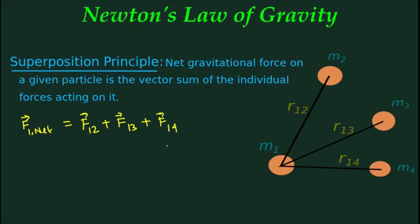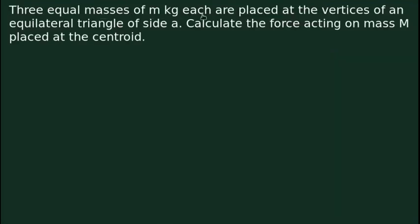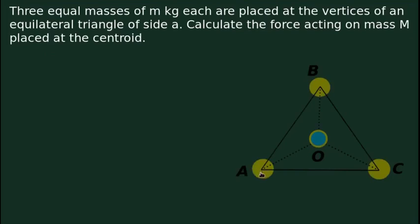Let's take an example: three equal masses of m kg each are placed at the vertices of an equilateral triangle. Calculate the force acting on mass capital M placed at the centroid. Let's draw a diagram for it. ABC is an equilateral triangle.